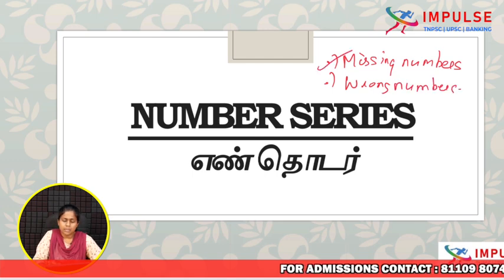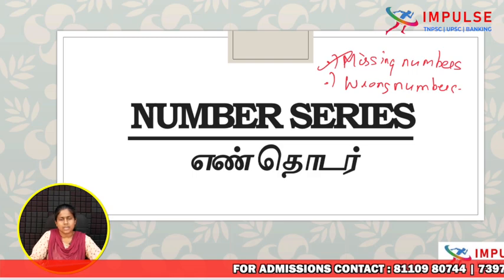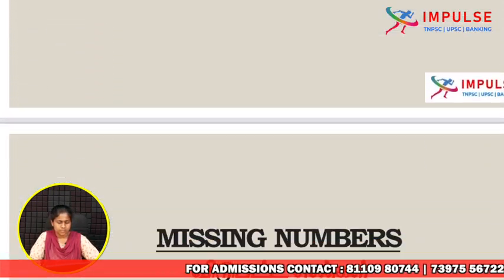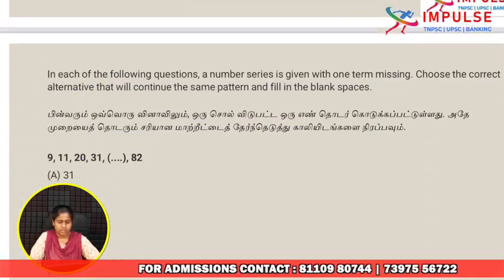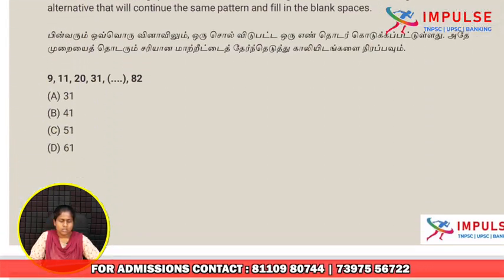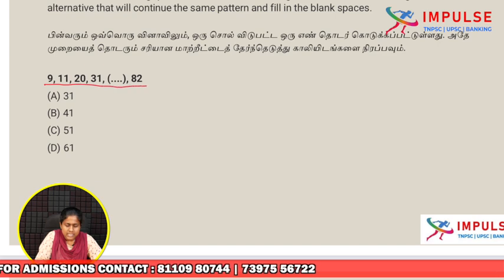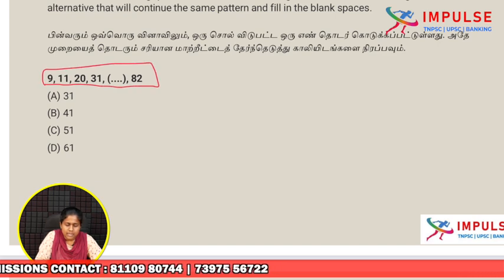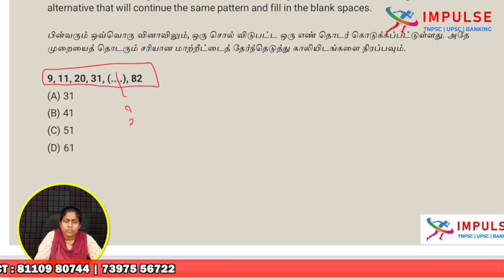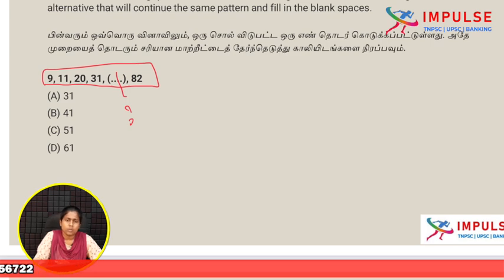Now let's look at the missing numbers. Missing numbers is a set of numbers where one number is missing, and we need to find the logic.